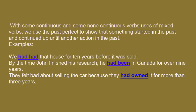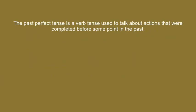With some continuous and some non-continuous verbs — uses of mixed verbs — we use the past perfect to show that something started in the past and continued up until another action in the past. Examples: We had had that house for ten years before it was sold. By the time John finished his research, he had been in Canada for over nine years. They felt bad about selling the car because they had owned it for more than three years.